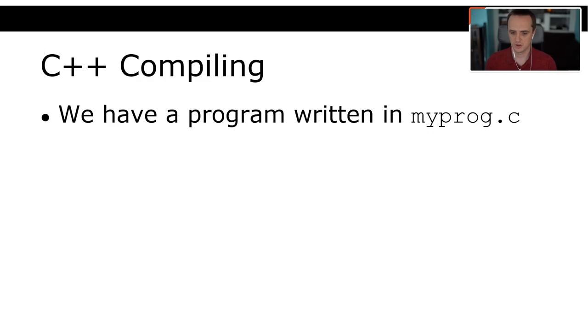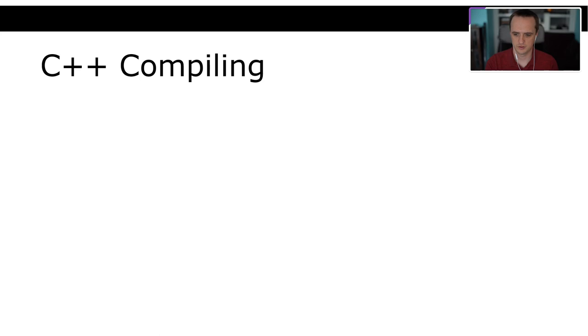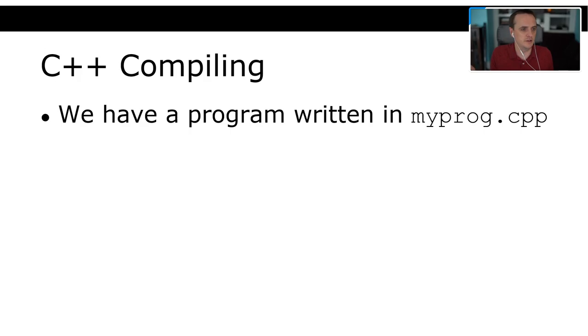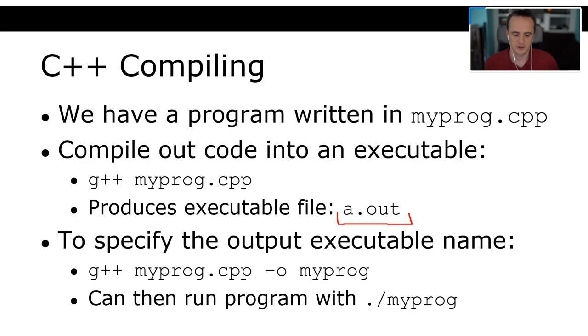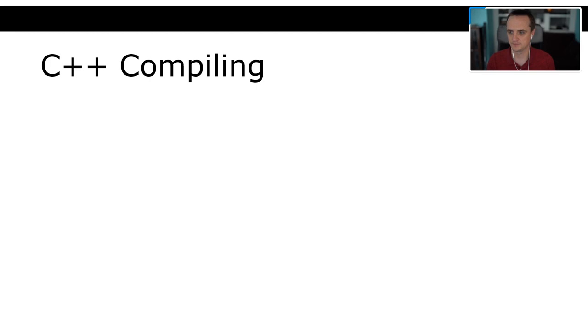If we've written a program in myProgram.cpp and want to compile it, we type 'g++ myProgram.cpp'. By default, the output goes into a file called a.out. If you want to specify the name of the executable, you type '-o' followed by the name, and then you can run it with ./myProgram. Very easy.